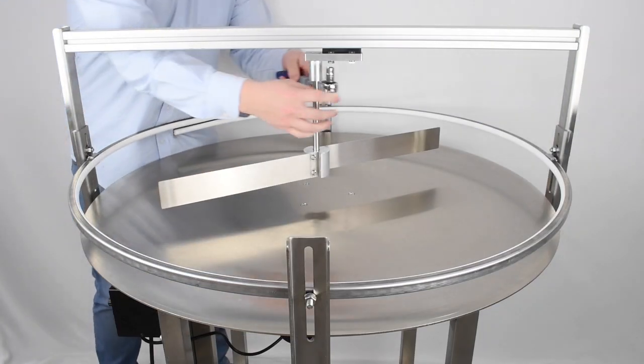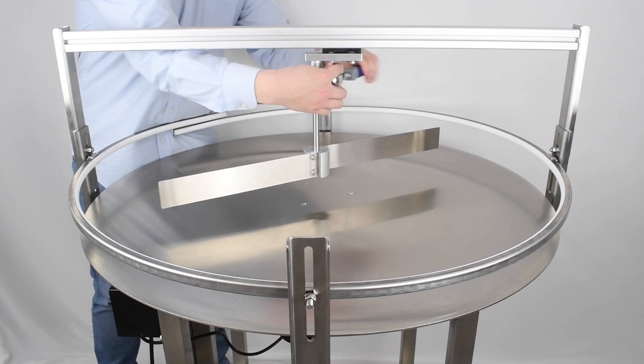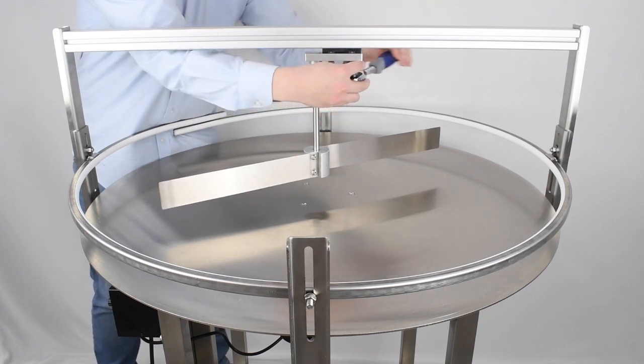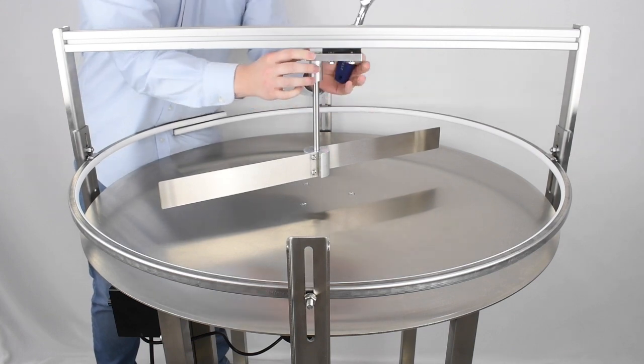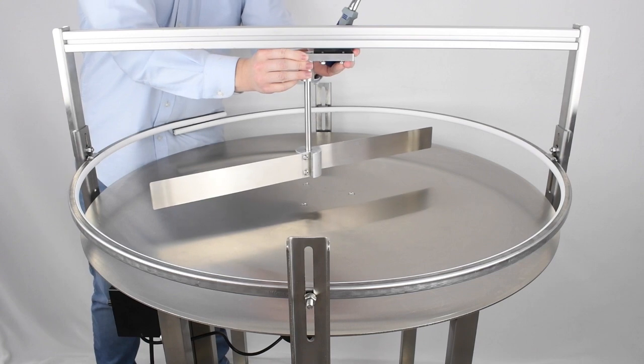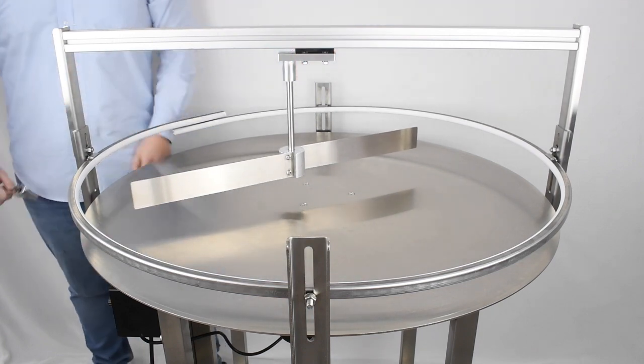The final step is to adjust the horizontal positioning of the unscrambler blades. To do so, use a 7-16 wrench to loosen but not remove the two screws holding the unscrambler blades to the unscrambler bar. This will allow the blades to move back and forth along the bar.